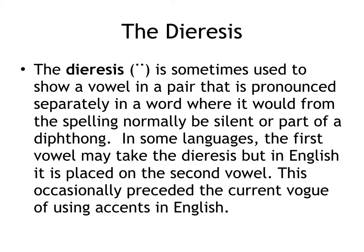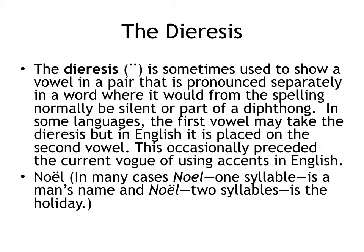The next diacritical mark is the dieresis, which is two dots over the vowel. It is sometimes used to show a vowel in a pair that's pronounced separately in a word where it would normally be silent or part of a diphthong. In English, it's placed on the second vowel, and this occasionally preceded the current vogue of using accents in English. A simple example is Noël. In many cases, Noel without the dieresis is a man's name pronounced with one syllable and a long O, whereas Noël with the dieresis pronounced in two syllables is the synonym for Christmas.